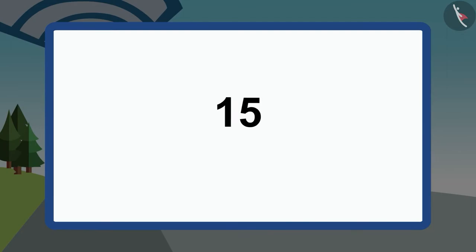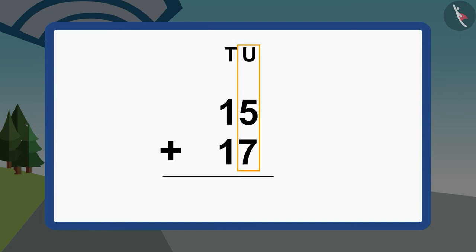First, we will write the numbers like this. Now, we will add the numbers in the unit section. There are 5 and 7. 5 plus 7 is equal to 12.